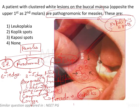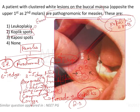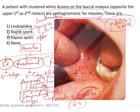The prodromal symptoms appear two to three days before Koplik's spots. Koplik's spots are basically enanthematous reddish or grayish-white spots generally seen opposite the molars in the buccal mucosa — typically opposite the first and second molars on the mandibular side.